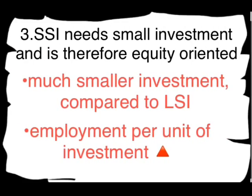The third feature: SSIs need small investment and are therefore equity-oriented. We have already discussed the difference between equality and equity. Now, the investment limit for small scale industries is a maximum of up to 5 crore and a minimum of 25 lakhs. As compared to large scale industries, the investment in small scale industries is very low. Because the investment is less, the chances of profit are more.